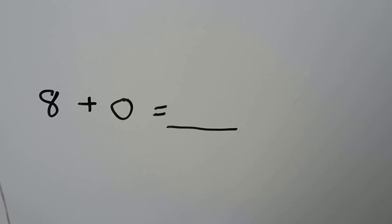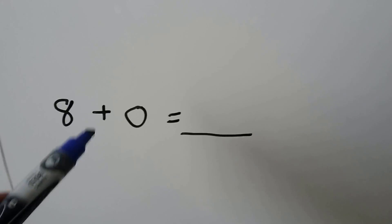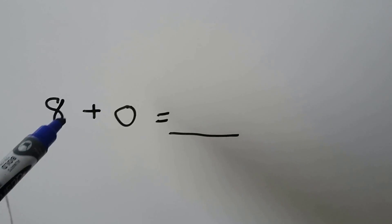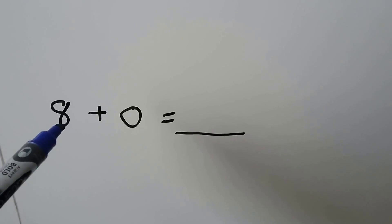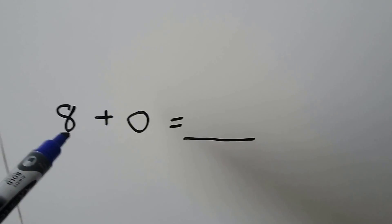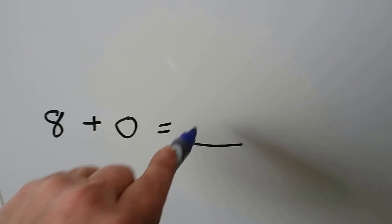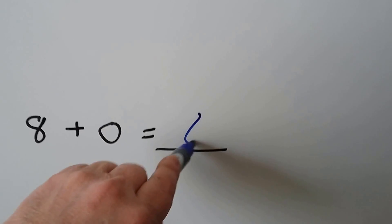Eight plus zero. Whenever we add zero to a number, the number stays the same, so that's just eight.